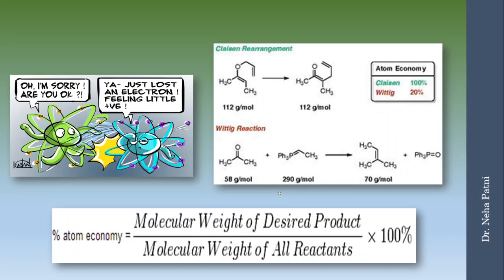If you see the formula, it has to be molecular weight of the desired product. Please focus on the word desired product - jo hume chahiye reaction mein hum bana rahe hai woh hoga desired product, aur jo nahi chahiye but extra ban raha hai that would be byproduct. Percentage atom economy says that you divide molecular weight of the desired product by the molecular weight of all reactants and multiply it with 100 to get the percentage.